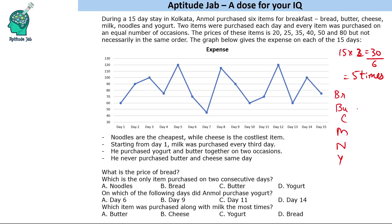The information given is: noodles are the cheapest, so noodles is 20 rupees, and cheese is the costliest item, so cheese is 80 rupees. For the rest we do not know. Starting from day one, milk was purchased every third day — so milk was purchased on day 1, day 4, day 7, day 10, and day 13.